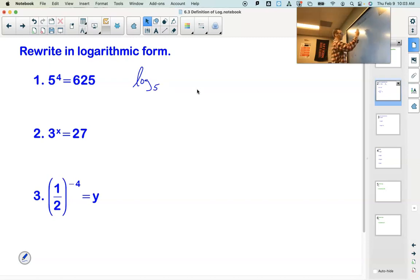Log base 5 of what? Well, remember that the logarithm is the exponent. So the logarithm is going to be equal to the exponent. So when I know 5 to the 4th equals 625, I know the base of the logarithm is 5. I know the logarithm equals 4 because the logarithm is the exponent.